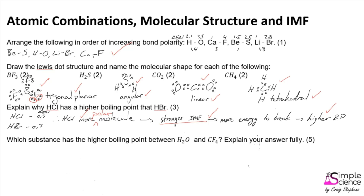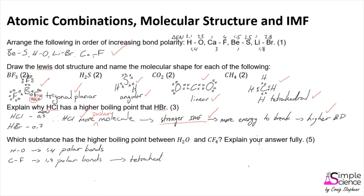A similar question asks which substance has the higher boiling point between H₂O and CF₄. We start again by looking at bond polarity. The bond polarity between hydrogen and oxygen has a significant electronegativity difference of 1.4, forming polar bonds. Similarly, the bond polarity between carbon and fluorine is also very significant, so those bonds are also polar. The key difference between these two molecules is their shape.